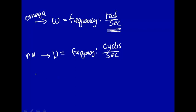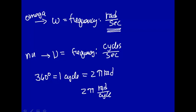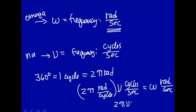Well, as you may know, in 360 degrees, that's one cycle, that is equal to 2 pi radian. So, 2 pi radian per cycle times the frequency in cycles per second, that will give you the frequency omega in radian per second. So the relationship between those two units, 2 pi nu is equal to omega.